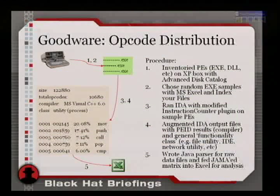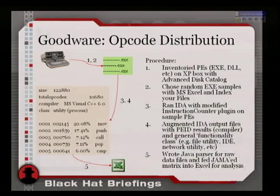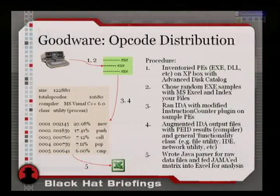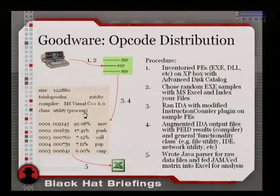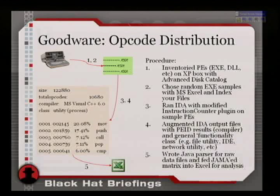A word about the procedure: I inventoried all the PEs and took a random sample. I ran them through IDA with a customized instruction counter plug-in, which also recorded some meta information. The plug-in gave me the compiler, and I added a few more factors by hand — what kind of software type it was — which is just my own taxonomy.